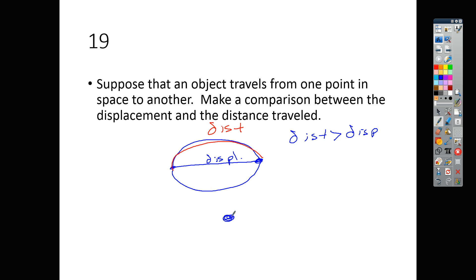And so our distance is greater than our displacement. If I just go from here to here, then our distance is equal to our displacement. So it's one of two things, you could say that distance is either greater than or equal to the displacement. And that is how you know number 19 is letter C.